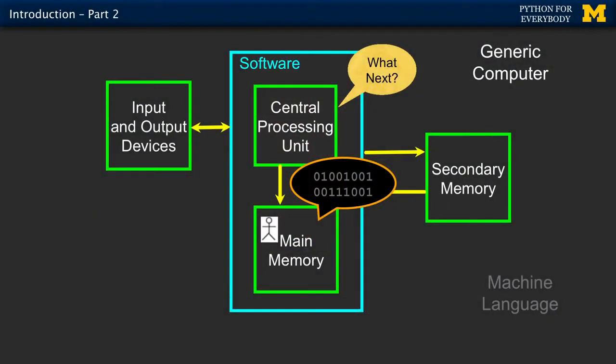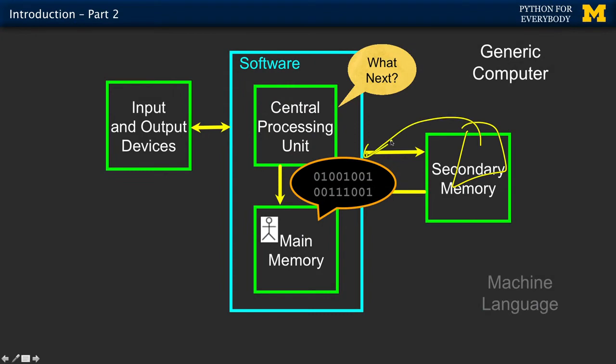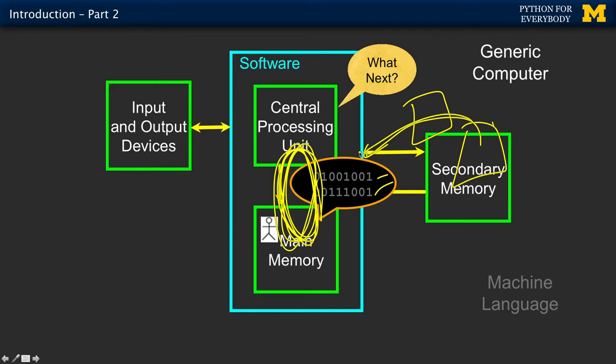The instructions that the central processor uses are a series of zeros and ones — 32 or 64 zeros and ones simultaneously fed in for each instruction. We use a language called machine language. I'd love to teach you machine language someday, but that's more towards being a computer scientist. We write Python, and something effectively translates it into machine language, and then machine language is what runs. The software that does this translation — called a compiler or an interpreter — we could talk more about that when you become more of a computer scientist.